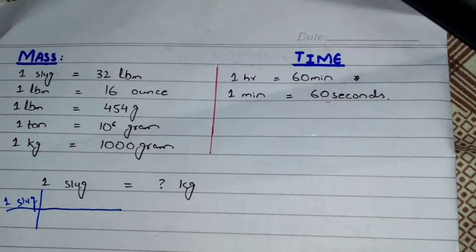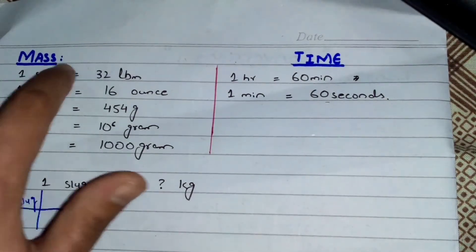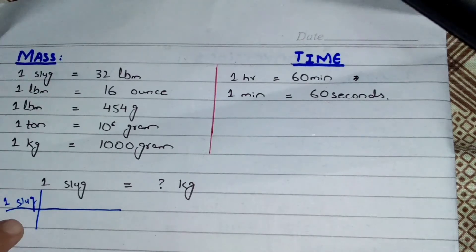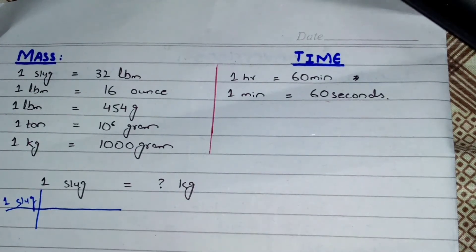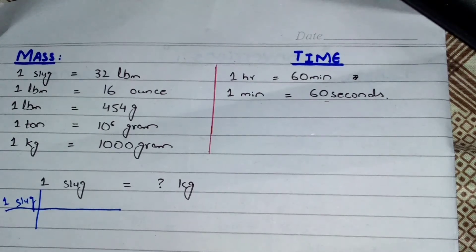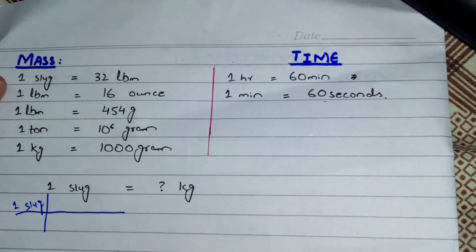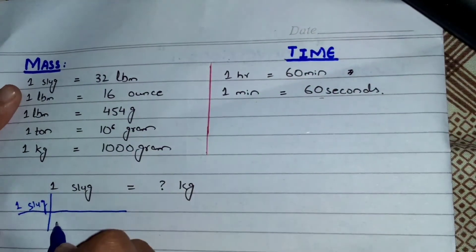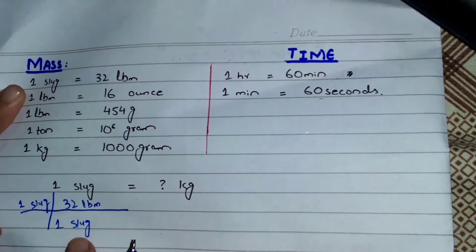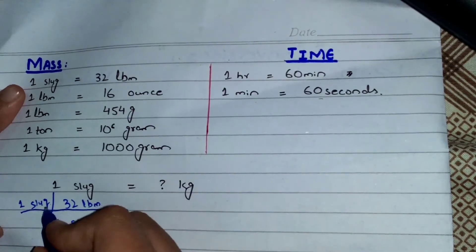The first step is to cancel out slug. I write the relationship one slug equals 32 lbm, placing slug in the denominator so it cancels out. This means one slug equals 32 lbm — so this slug will cancel out that slug, and now I have lbm remaining.